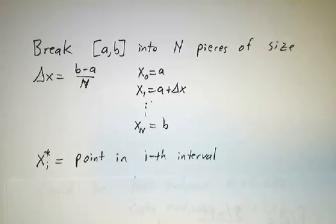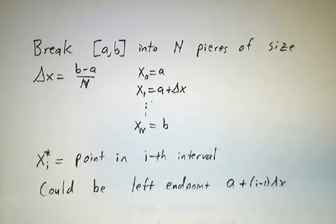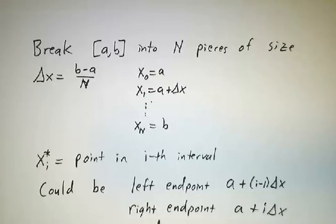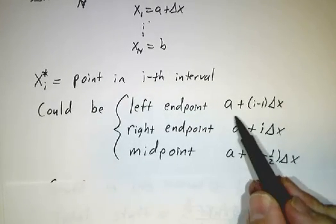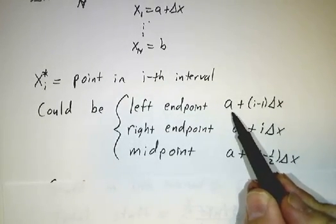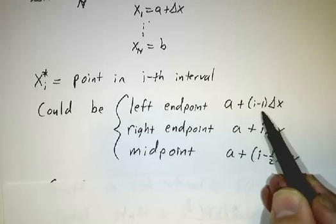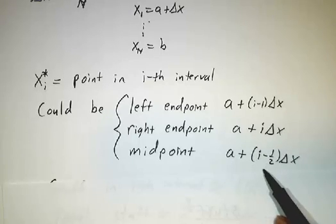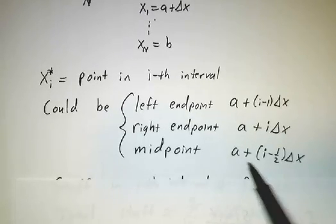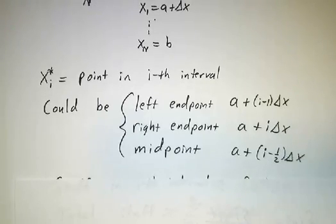And then we pick a point, we call it xi star. Some point in the ith interval, it's going to be the representative of that whole interval. And there are several rules for picking that representative. There's the left endpoint rule, where x1 star is really x0, and x2 star is x1, and x3 star is x2. You could use the right endpoint, or you could use the midpoint. In fact, the midpoint is probably the most accurate of the two, even though it's sometimes easier to do the calculations using left endpoints or right endpoints.